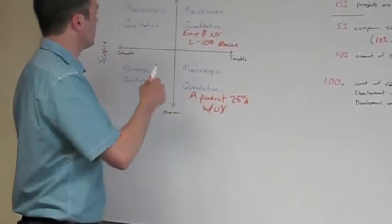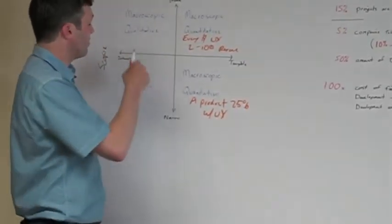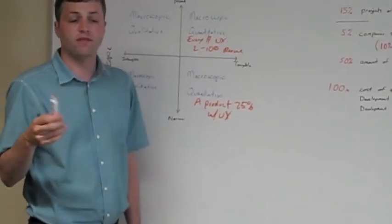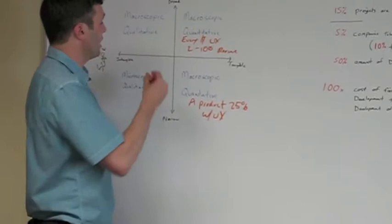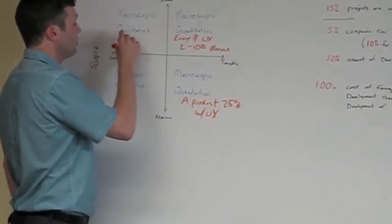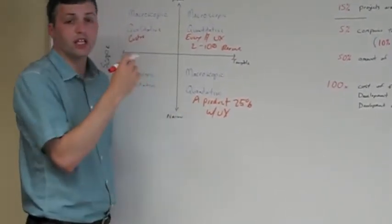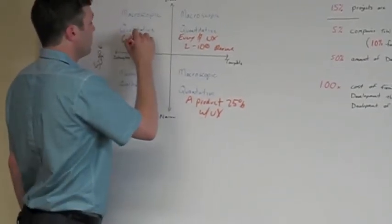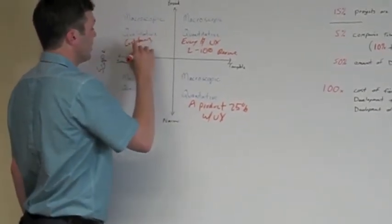When you get to the other side of the equation, you start talking about macroscopic and microscopic on the qualitative side. This is where the feelings portion starts to come in. This is where you say customers who are engaging with a project where UX has been and interests are really satisfied. So this is satisfied.